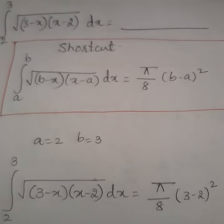The question is something like this: integral from 2 to 3 of square root of (3 minus x) times (x minus 2) dx equals what?